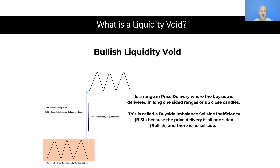A bullish liquidity void is essentially the opposite of a bearish liquidity void. It's a range in price delivery where the buy side is delivered in long one-sided ranges or up close candles. We start with price in equilibrium — a range or consolidation — then get displacement where only buy side is being delivered. So in this example we have a void of sell side liquidity, which is called a BISI — a buy side imbalance, sell side inefficiency — because only the buy side is being delivered and there's no sell side.